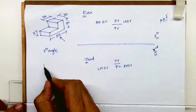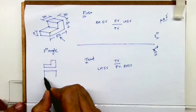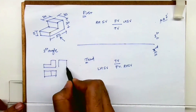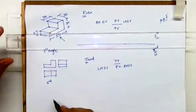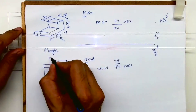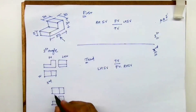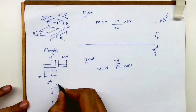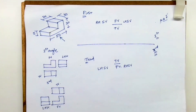So if I want to draw this in first angle: the front view will come here, the top view will come here, and the side view will come like this. If I'm doing the same in third angle: the front view comes here, the top view comes up. Here the front view is here, the top view is here, and this is the left-hand side. But in third angle: front view comes here, top view comes up, and the left-hand side view comes on the left-hand side.